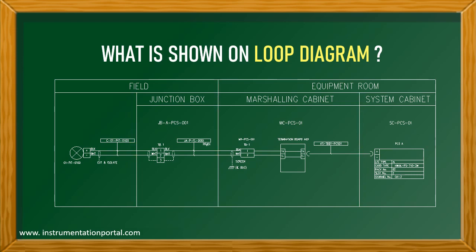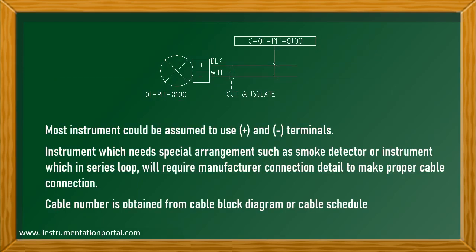Next, we will discuss how these information are obtained. In the instrument section, most instrument terminal numbers are assumed to use plus and minus terminals. However, instruments which need special arrangement, such as smoke detectors, or instruments which are in series loop, will require manufacturer connection detail to make the cable properly connected. The cable number is obtained from cable block diagram drawing.